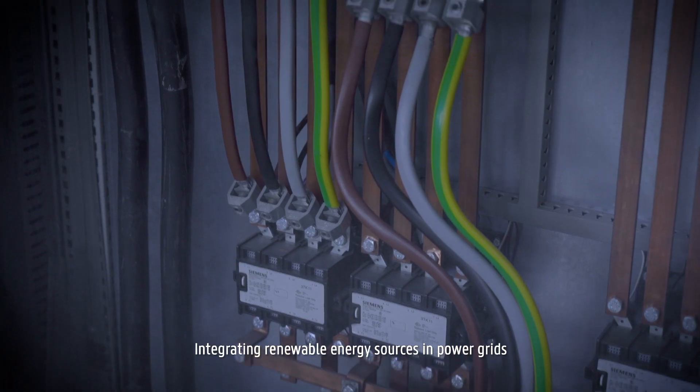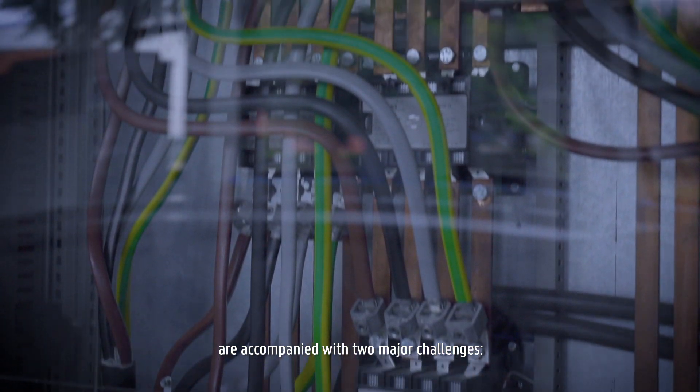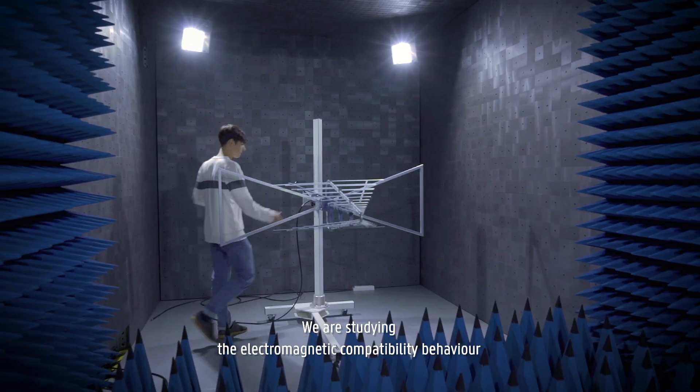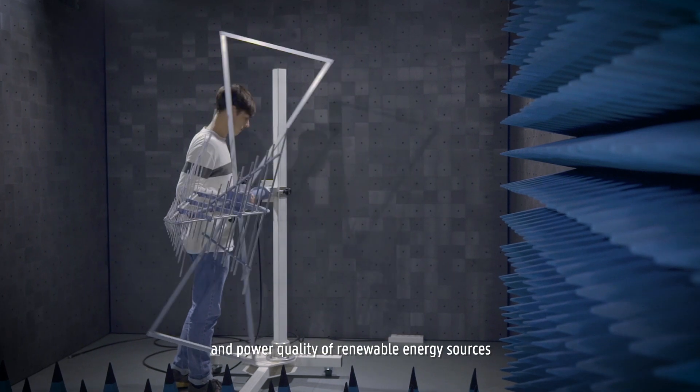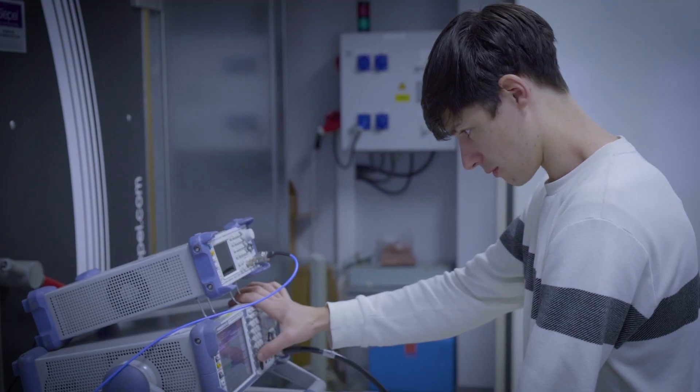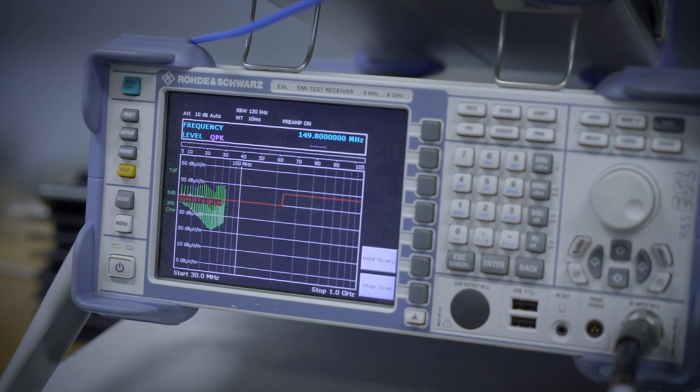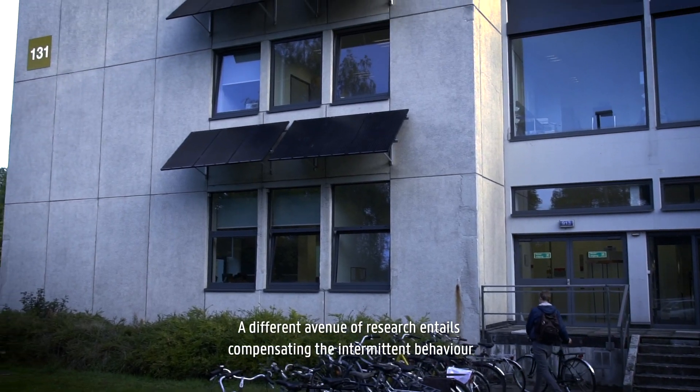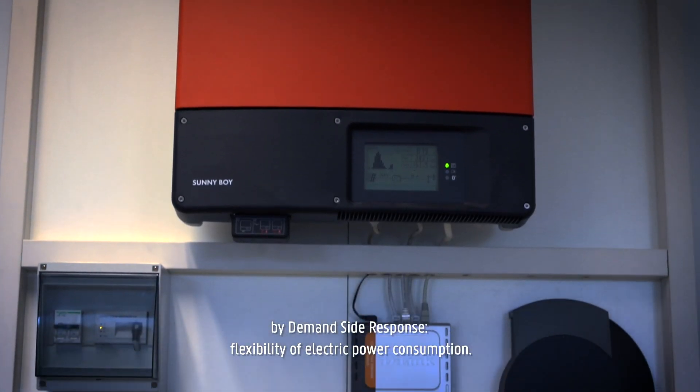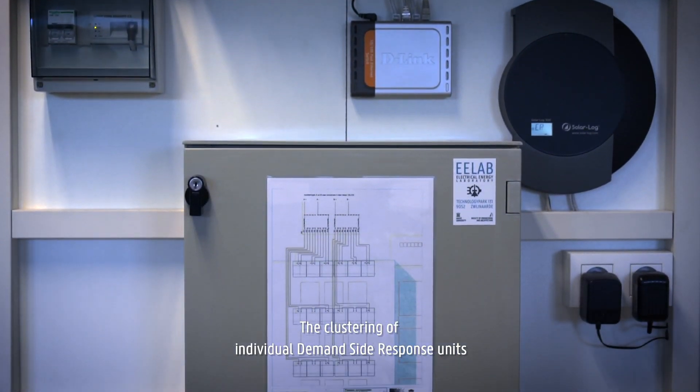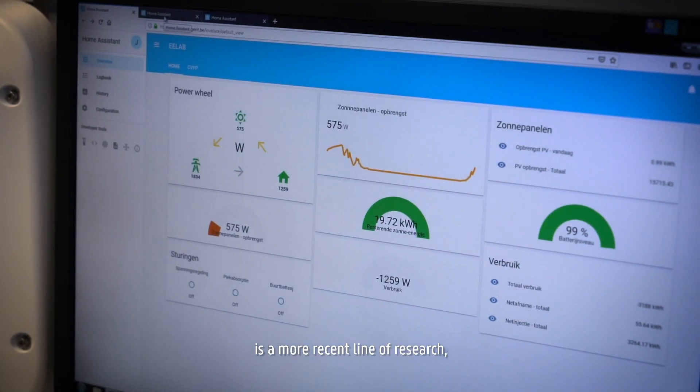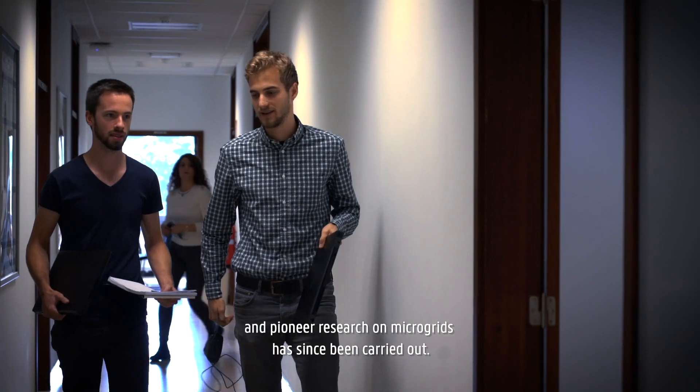Integrating renewable energy sources in power grids are accompanied with two major challenges, their intermittent character and the power quality. We are studying the electromagnetic compatibility behavior and power quality of renewable energy sources to ensure no harmful interferences with other devices on the grid occur. A different avenue of research entails compensating the intermittent behavior by demand-side response, flexibility of electric power consumption. The clustering of individual demand-side response units into virtual power plants or local energy communities is a more recent line of research, and pioneer research on microgrids has since been carried out.